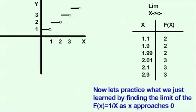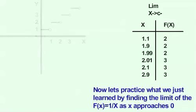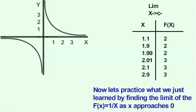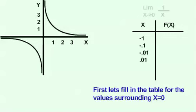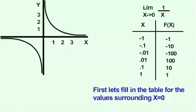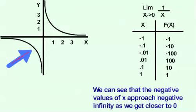Now, let's practice what we just learned by finding the limit of f(x) = 1/x as x approaches 0. Let's first fill in the tables for the values surrounding x equals 0. We can see that the negative values of x approach negative infinity as we get closer to 0.